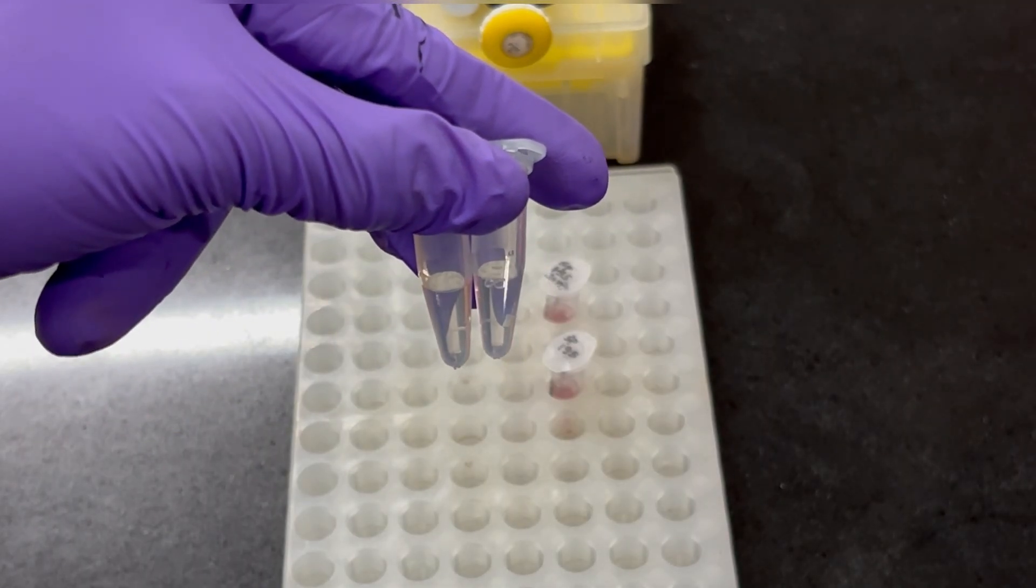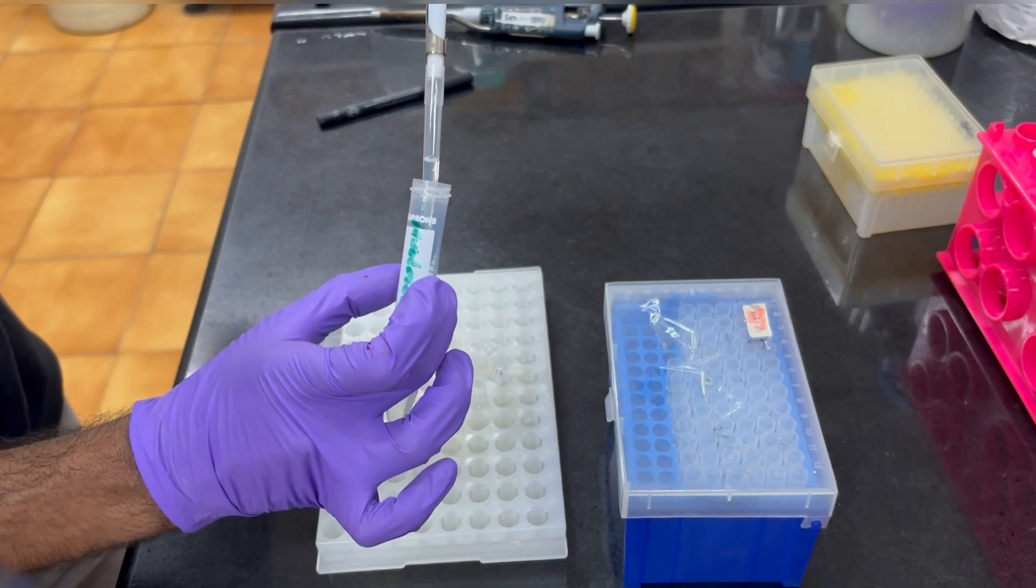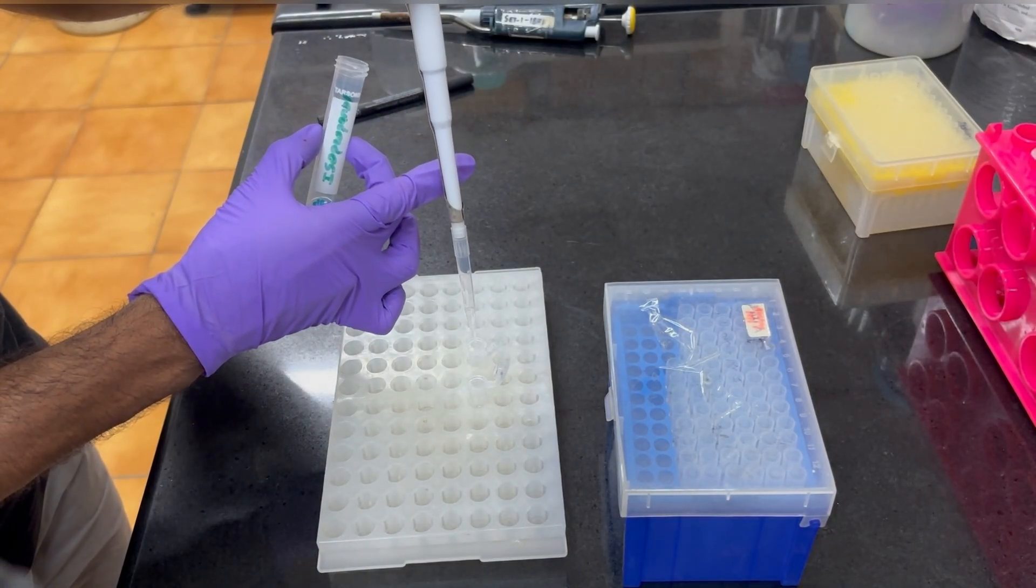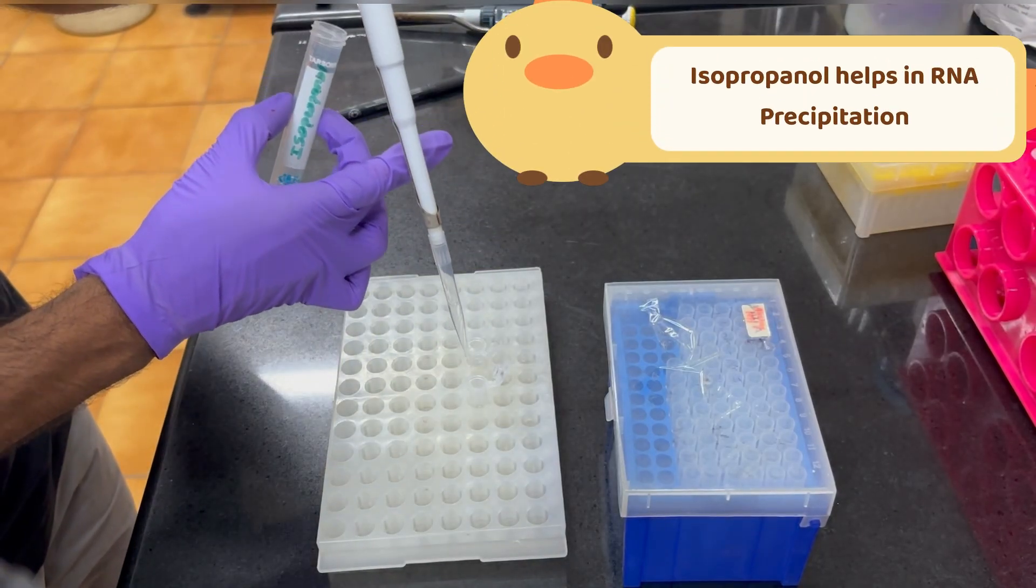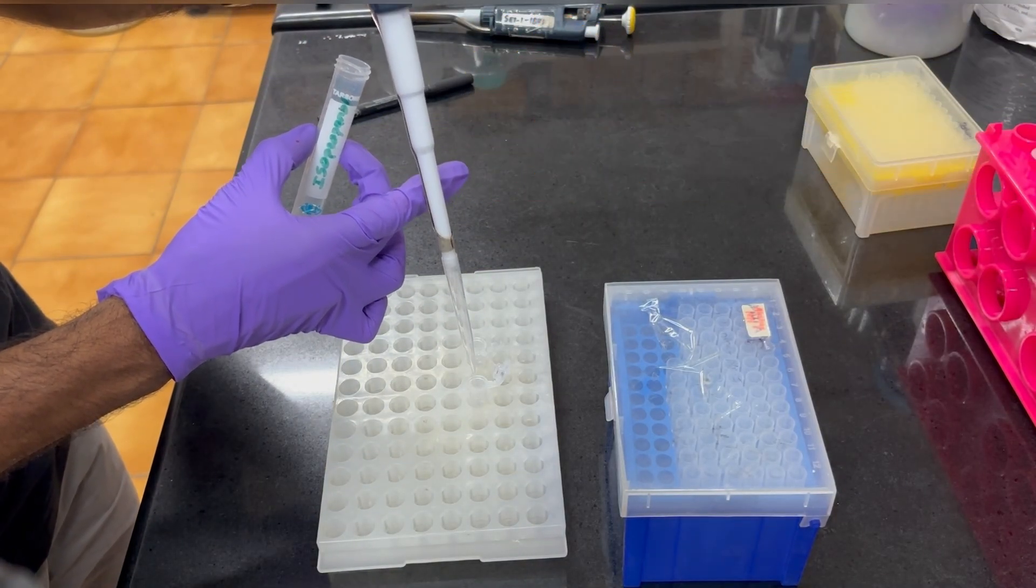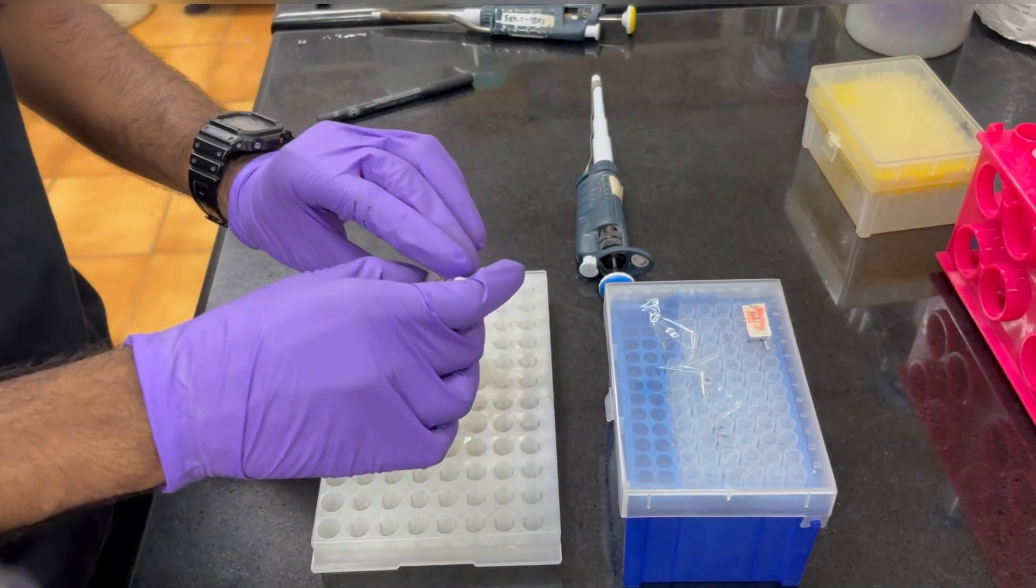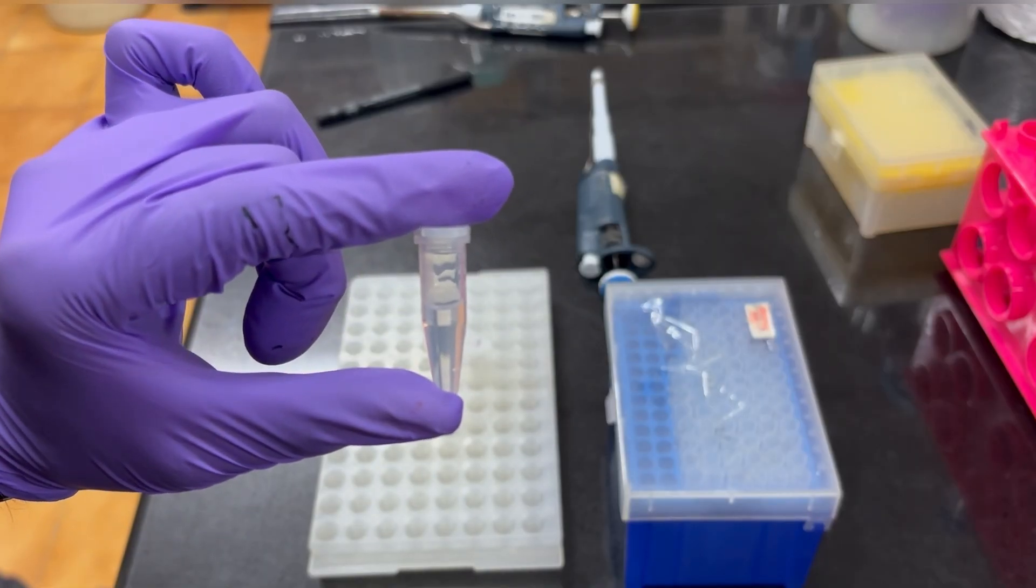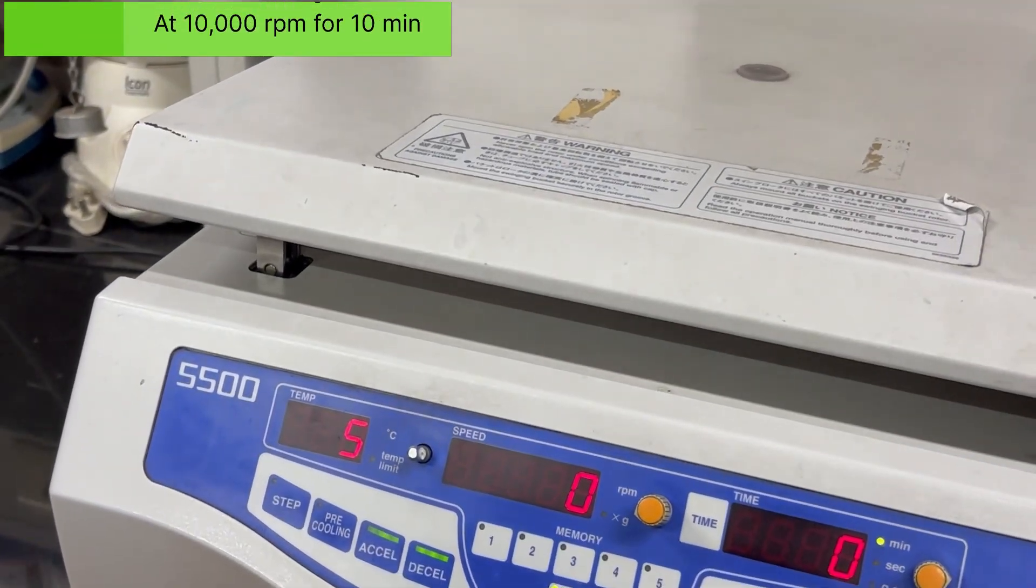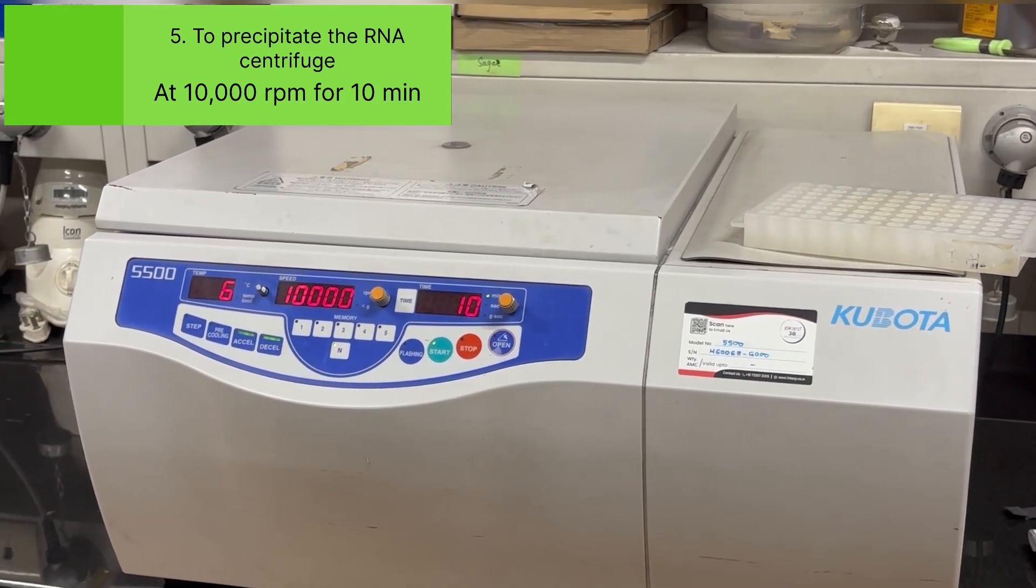The upper aqueous phase that we have collected into the fresh tube, into that tube add 500 microliter of isopropanol. Isopropanol helps in the precipitation of the RNA. So after adding isopropanol, you just make sure you are not vortexing, you just mix it like what I am showing here. To pellet down RNA, centrifuge at 10,000 rpm for 10 minutes at 4 degrees Celsius.